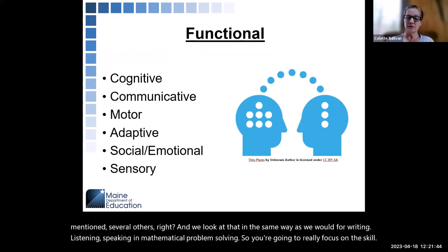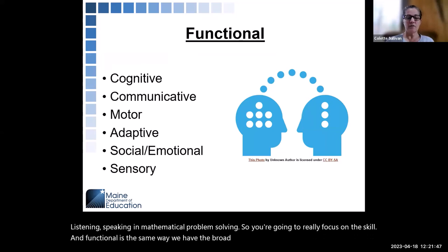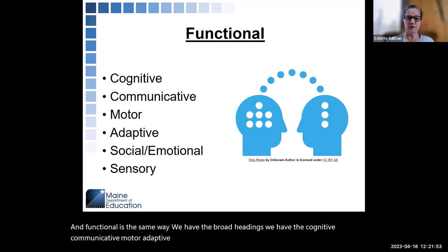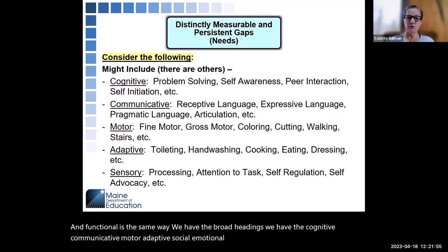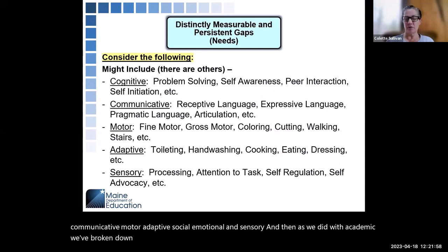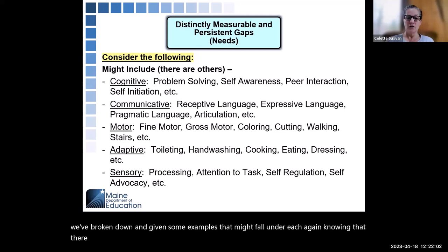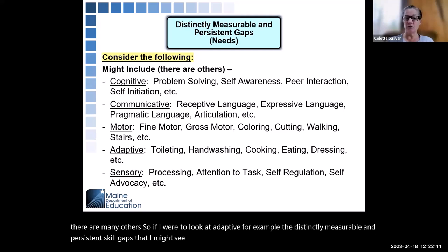Functional is the same way. We have the broad headings: cognitive, communicative, motor, adaptive, social, emotional, and sensory. And as we did with academic, we've broken down and given you some examples that might fall under each — knowing that there are many others. So if I were to look at adaptive, for example, the distinctly measurable and persistent skill gaps I might see could be toileting, handwashing, cooking, eating, dressing, or many others.